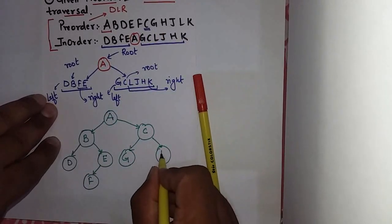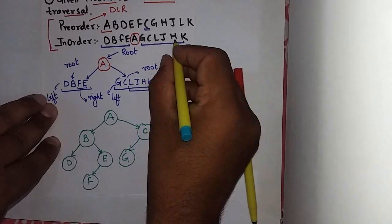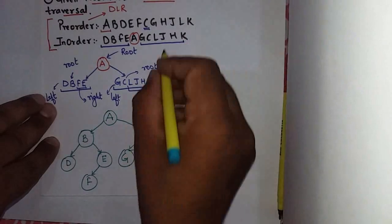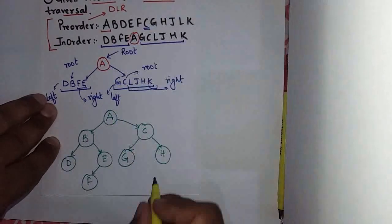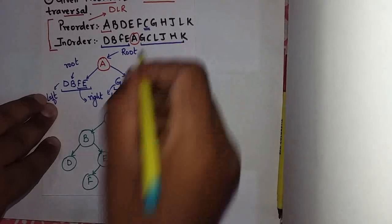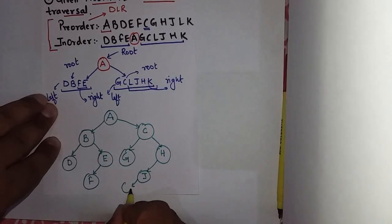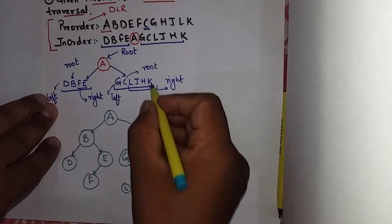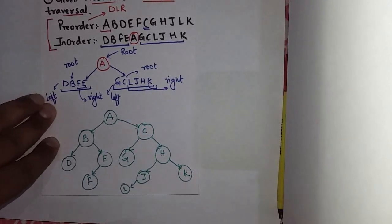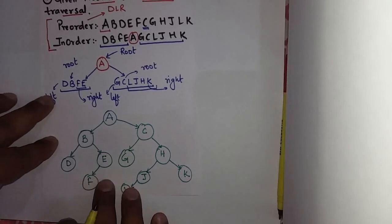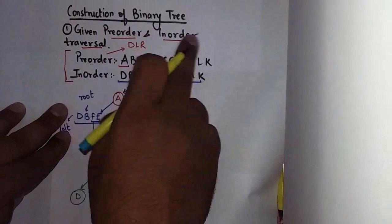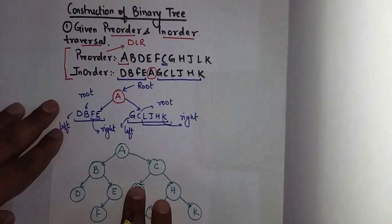And H's left will have L and J. And out of L and J which will become root? J. And J's left has L. And H's right has K. So this is the complete binary tree with the help of preorder and inorder traversal.